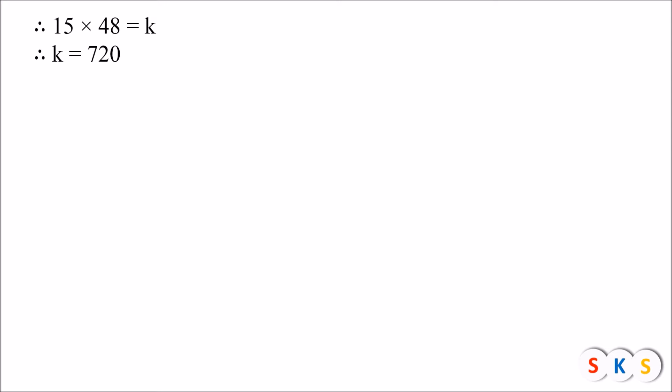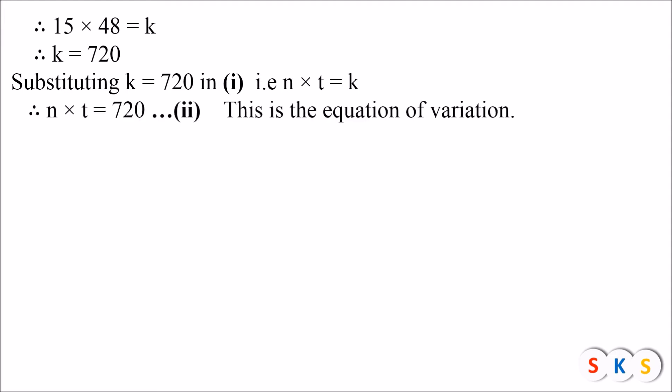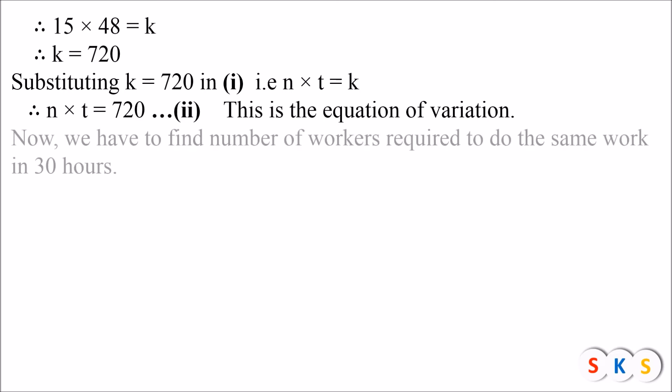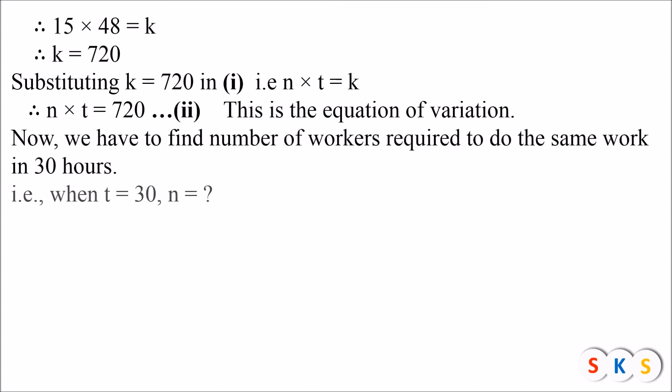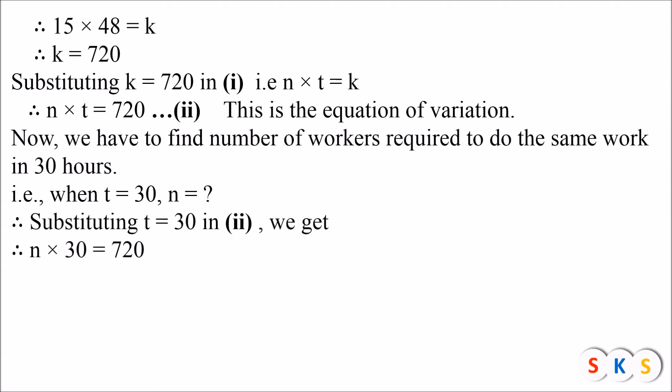We substitute this value of k back in equation 1 — n × t = k — so we get n × t = 720. This is the equation of variation. Now this equation will tell us the number of workers required to complete the same work in 30 hours. Here t = 30, so substituting t = 30 in the equation gives n × 30 = 720.